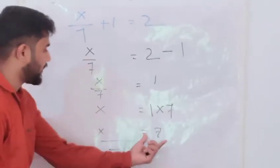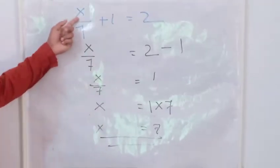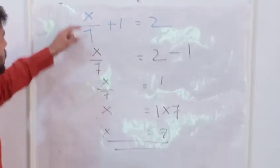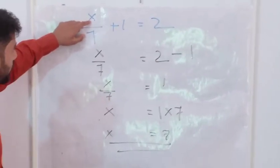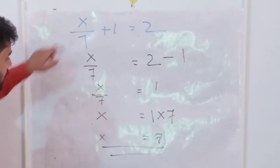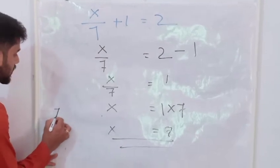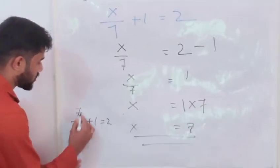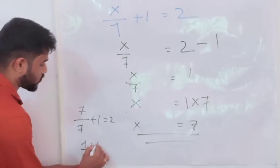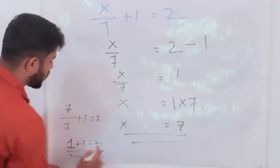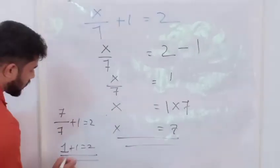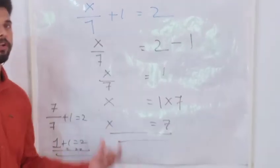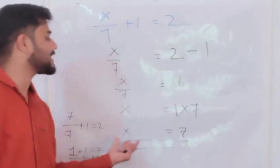If you apply this value of X as 7 and put it in the equation: 7 by 7 plus 1, which is equal to 2. 7 by 7 is 1. 1 plus 1, which is equal to 2. Left hand side and right hand side — 1 plus 1 is 2, and here also 2. Left hand side and right hand side are equal. So, the value of X is 7.